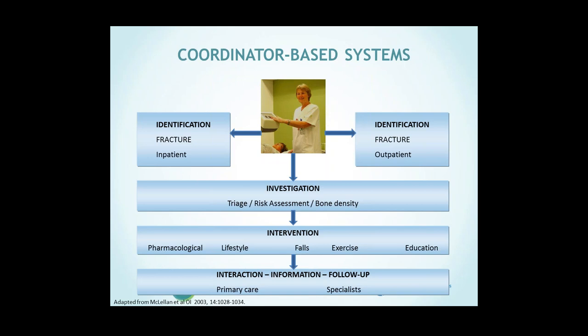The coordinator acts as the spider in the web, responsible for identifying fracture patients — whether inpatients or outpatients — and coordinating investigations, starting with risk assessment and, where necessary, bone density measurements. The coordinator also coordinates interventions against osteoporosis, whether undertaken where the fracture is identified or in primary care, depending on your healthcare system. The final step is information and follow-up, because any of the measures initiated for osteoporosis also have problems with adherence. This gives an overview of how the organization of a fracture liaison service is preferably done.